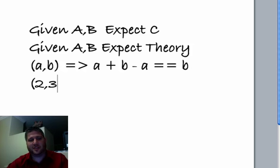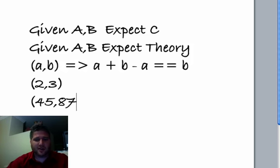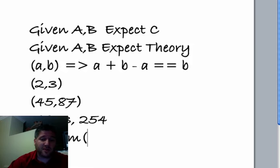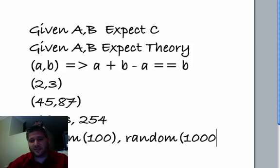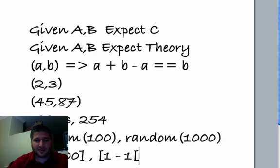Now I can throw things at it like 2 and 3, but I no longer need to know about the outcome. So I can throw things at 45 and 98, or 2,015, or give me a random number that's less than a hundred and a random number that's less than a thousand. Or if I want to be really complete, give me the range of numbers from 1 to 1,000 and the range of numbers from 1 to 1,000.